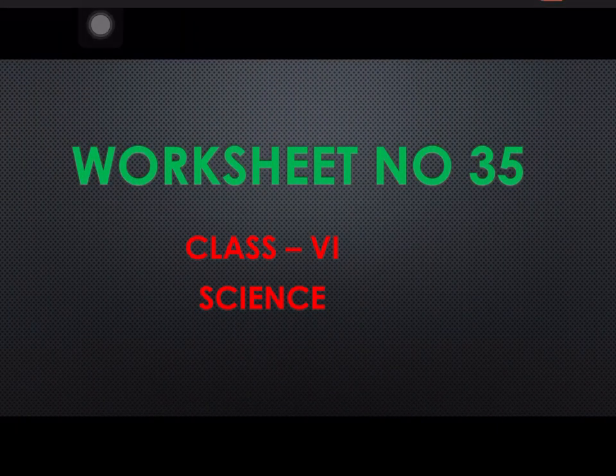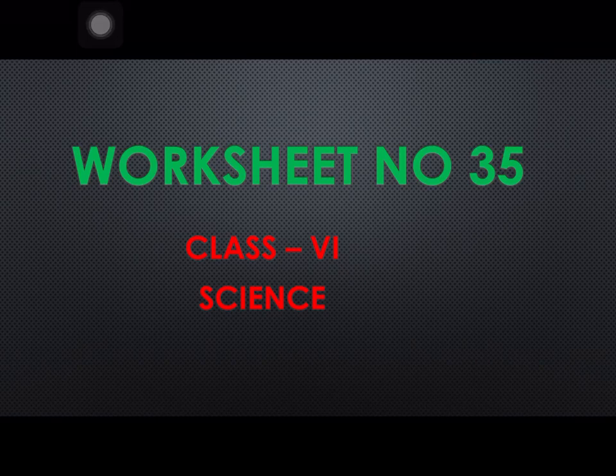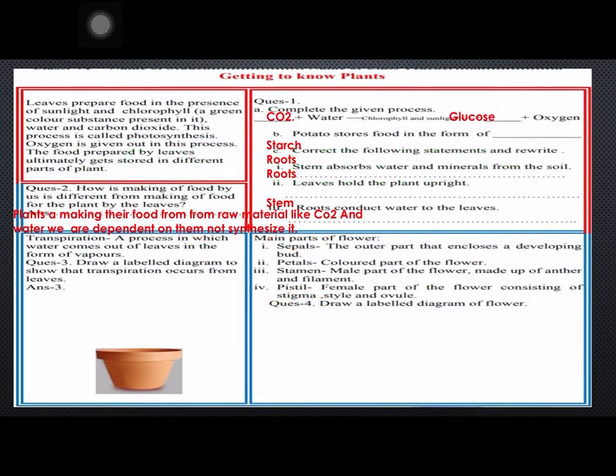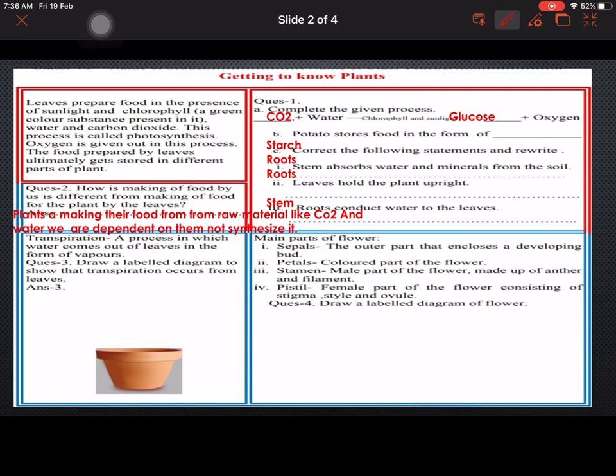Hello everyone, today we are discussing worksheet number 35, Class 6 Science. Getting to know plants - we are revising this worksheet. Leaves prepare food in presence of sunlight and chlorophyll, the green colored substance present in it. That is chlorophyll.